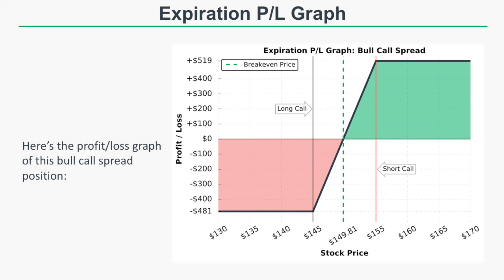At any price between $145 and the break-even price of $149.81, there can be a partial loss. If the long call expires in the money but the stock price is below break-even, that long call has some residual value at expiration, so we won't lose the full $4.81 debit — but the strategy is still a loser overall. The break-even price is the long call strike of $145 plus the $4.81 debit, which brings the break-even price to $149.81.